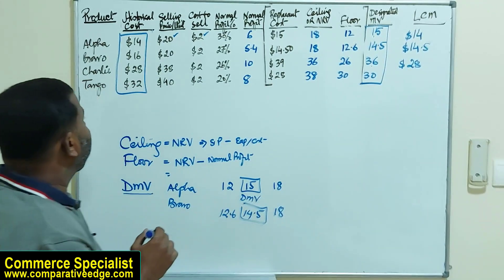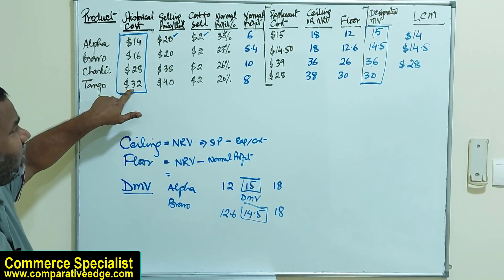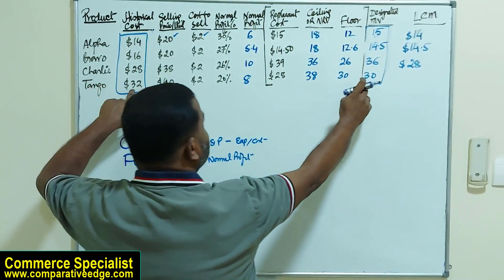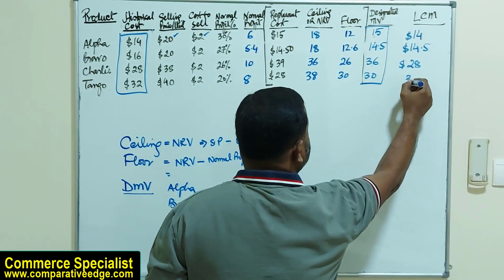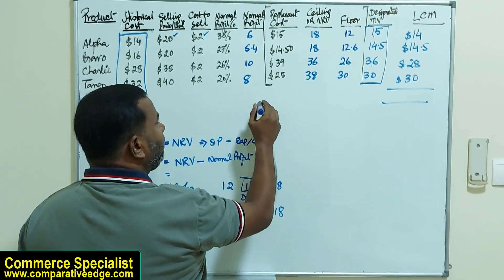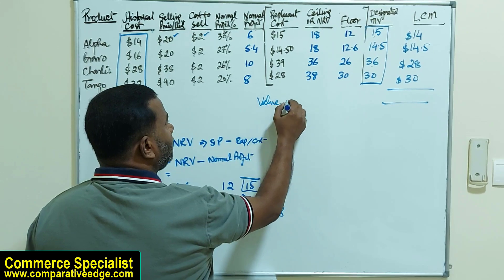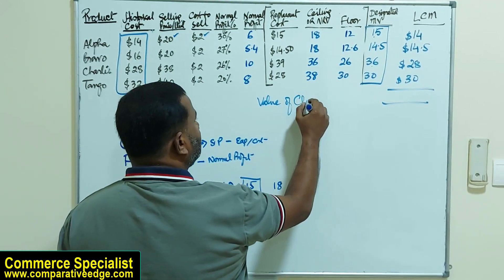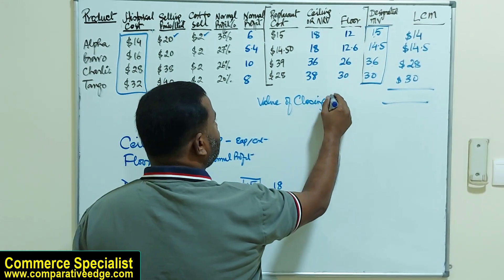Finally, for Tango, the historical cost is $32 and the designated market value is $30, so I'm going to take the lower, which is $30. In the end I'll add all this. It will give me the value of closing inventory, which is $86.50.